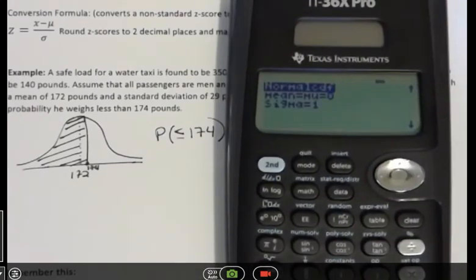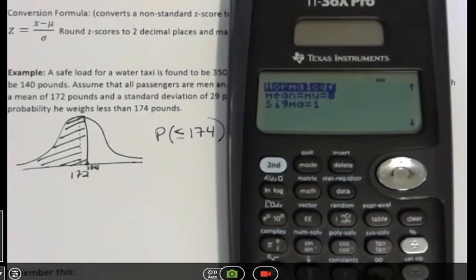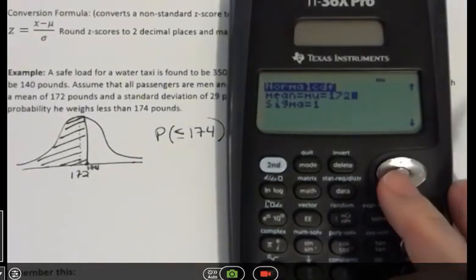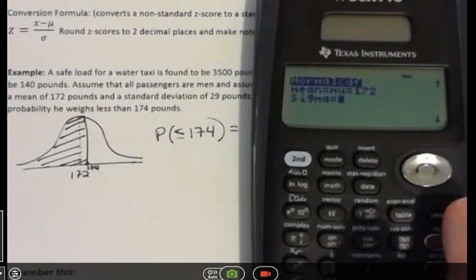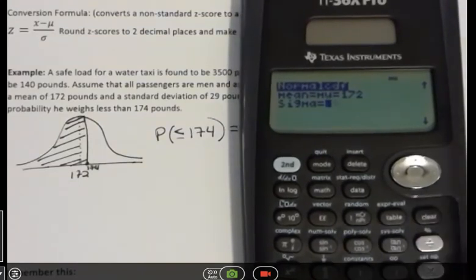Now my mean is not zero, it's 172. And my sigma is not one, it's 29. That was given in the problem. And so now if I hit enter, it'll say, well, what ranges are you interested in?